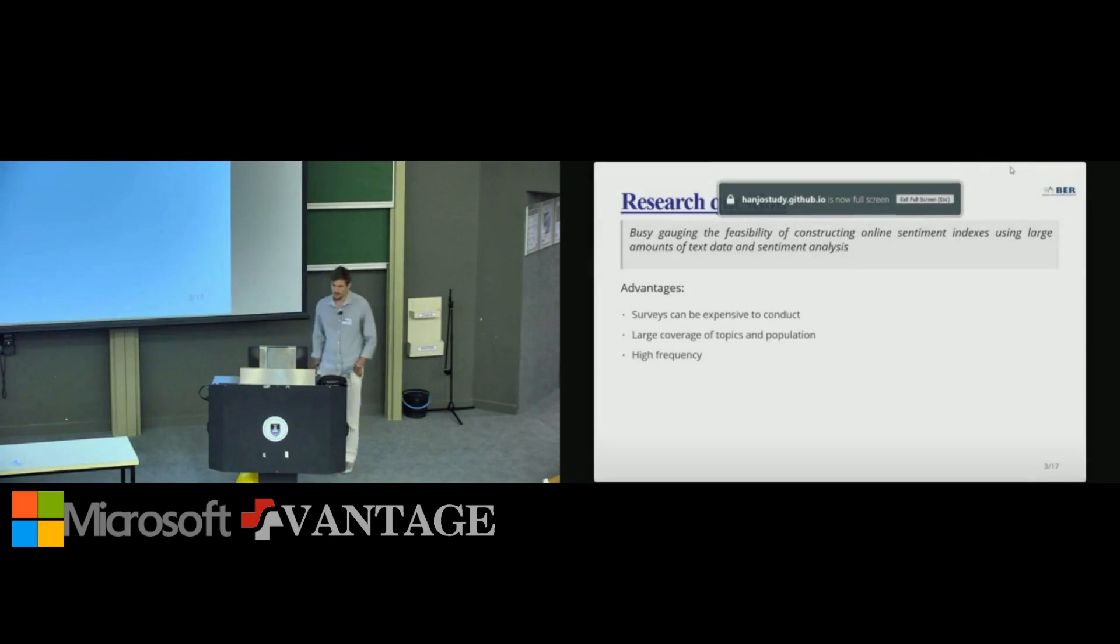So the research question that I'm starting to address is we're trying to gauge the feasibility of constructing online sentiment indices using large amounts of text data and combining sentiment analysis. So the advantages are clear, right? Surveys can be expensive to conduct. Using news, we have large coverage across the whole population. And most importantly, these confidence indices released by the BER is on a quarterly basis. With news, we can have a much higher sort of finger on the pulse of the economy.